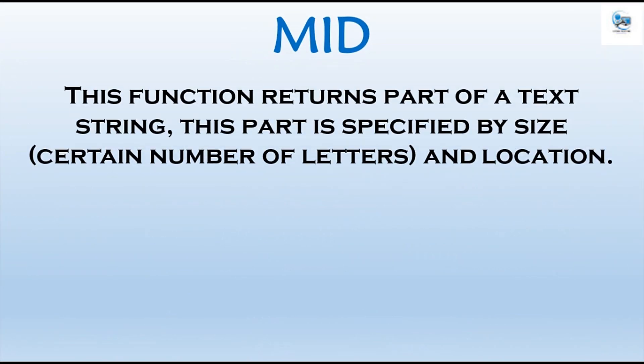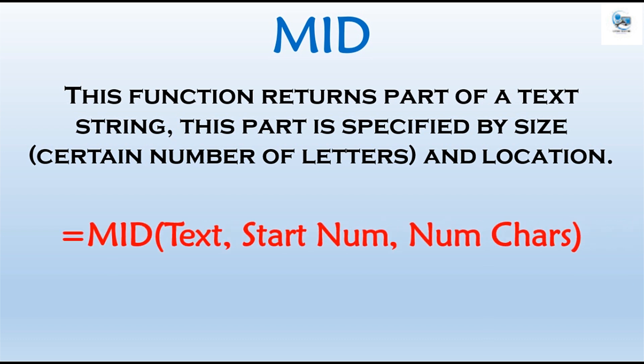MID function. This function returns part of a text. This part is specified by size — a certain number of letters — and location. This function takes three arguments. The first argument is the text you want to return a part of. The second argument is the starting letter position. The third argument is the number of characters you want to return.